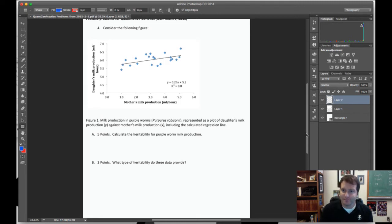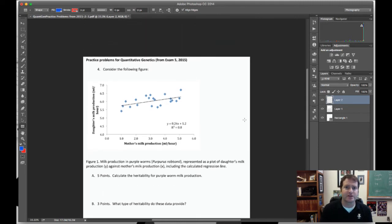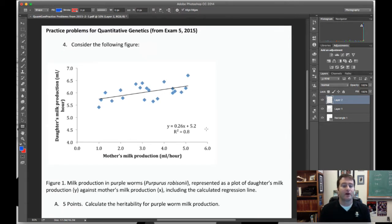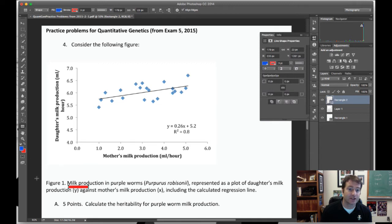This is from, I think it was last year's exam, so now we're going to call it a practice problem. What I'm showing you is just a simple linear regression of essentially offspring on parents for some fictitious example. It looks like this year we did milk production in purple worms, but it doesn't really matter.